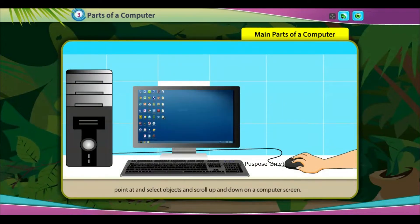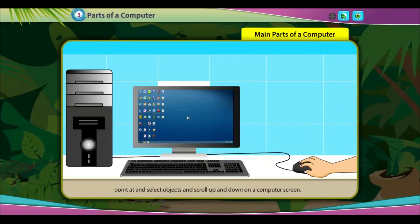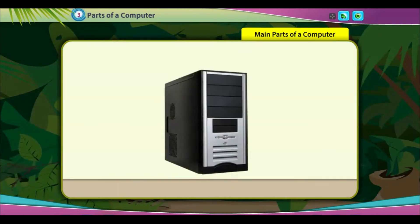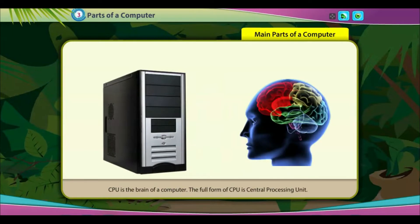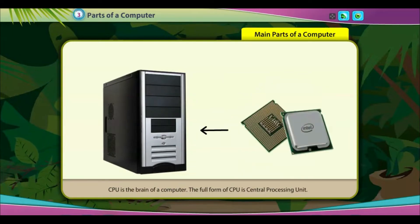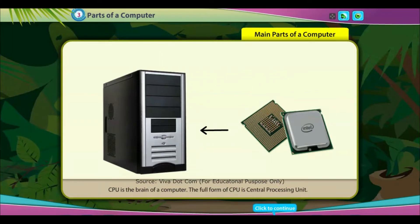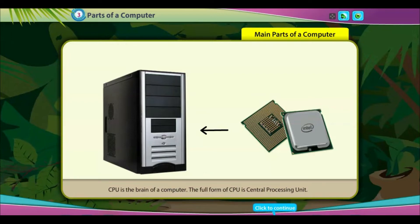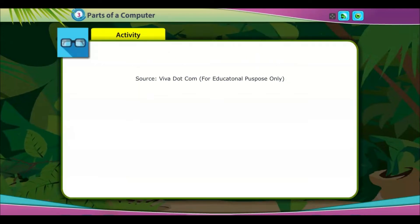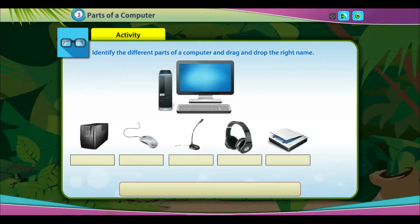Mouse: a mouse helps to draw and color pictures, point at and select objects, and scroll up and down on a computer screen. CPU: CPU is the brain of a computer. The full form of CPU is Central Processing Unit.